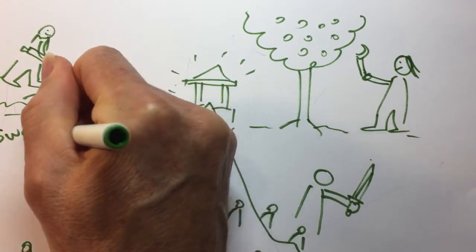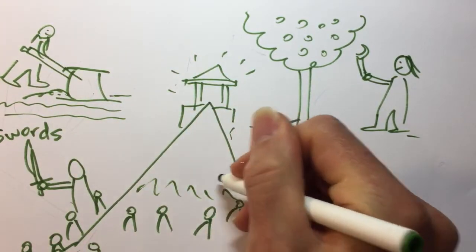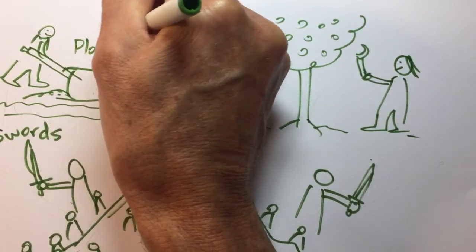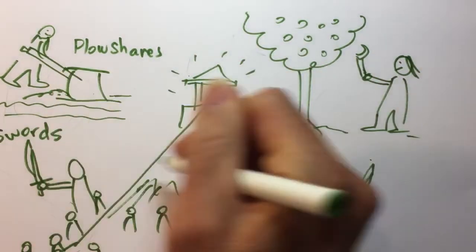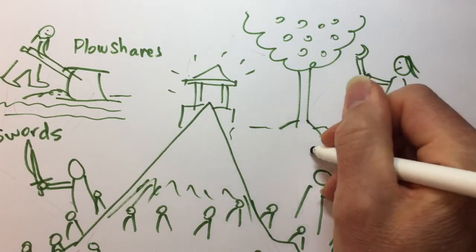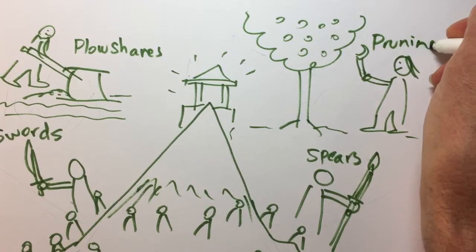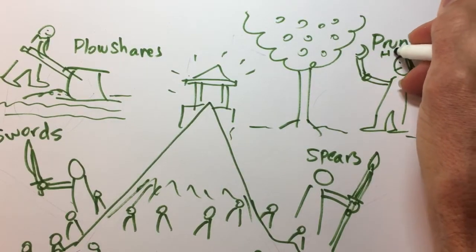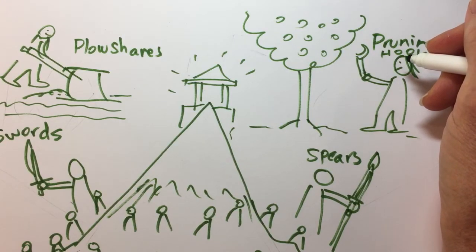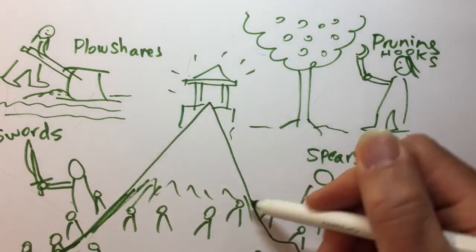So the scripture in Isaiah says people will beat their swords. People will come to the mountain of God and they'll learn the ways of peace. And they'll beat their swords into plow shares and beat their spears. This person maybe has a spear. Beat their spears into pruning hooks. This is what the Bible says in Isaiah.